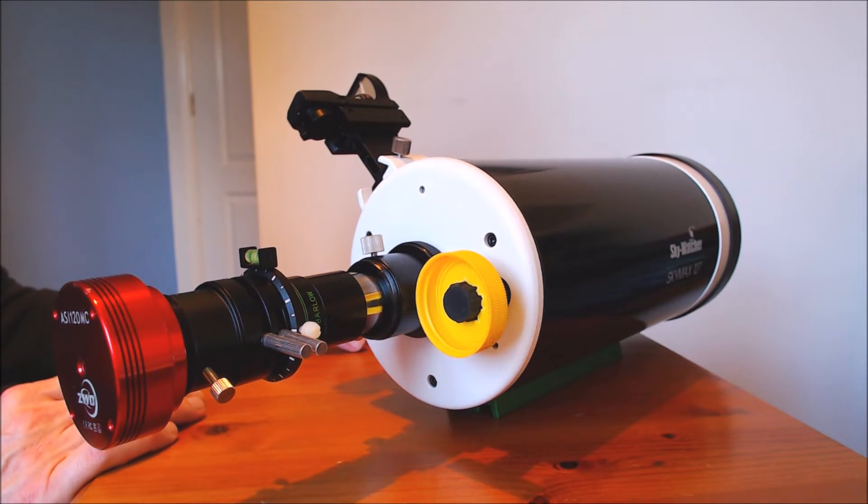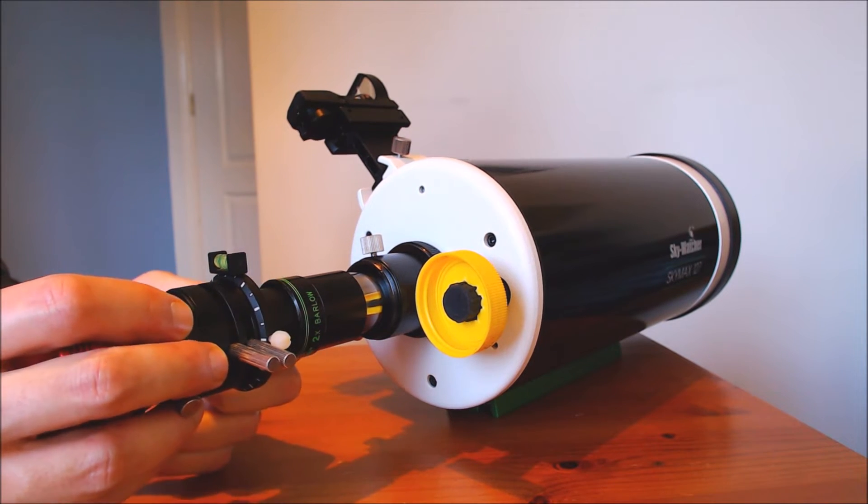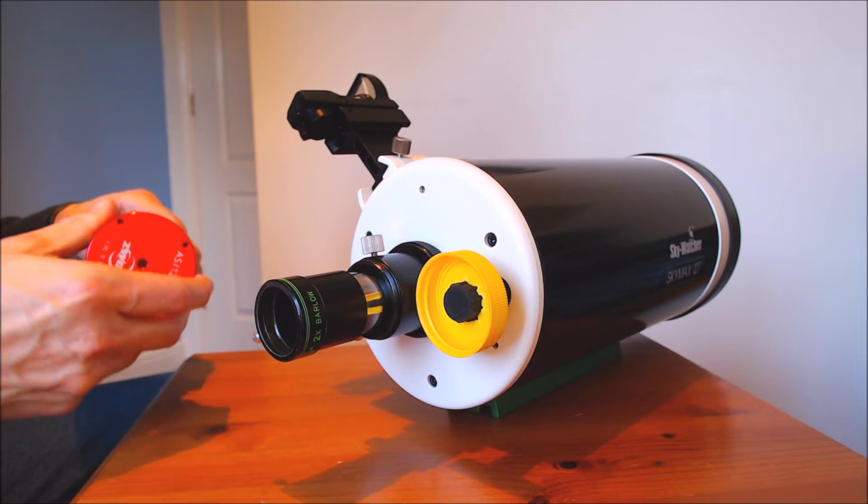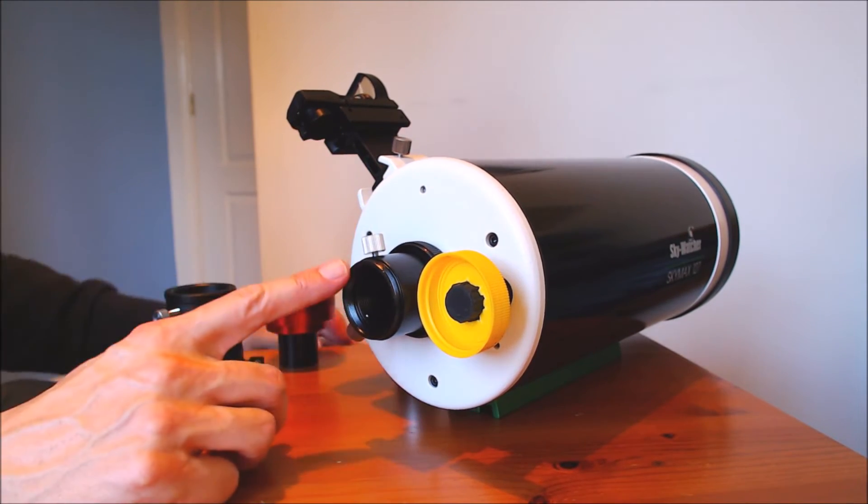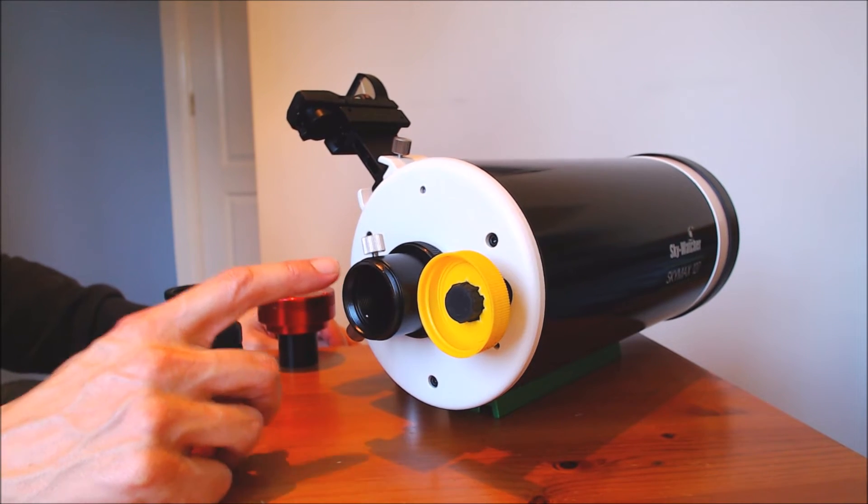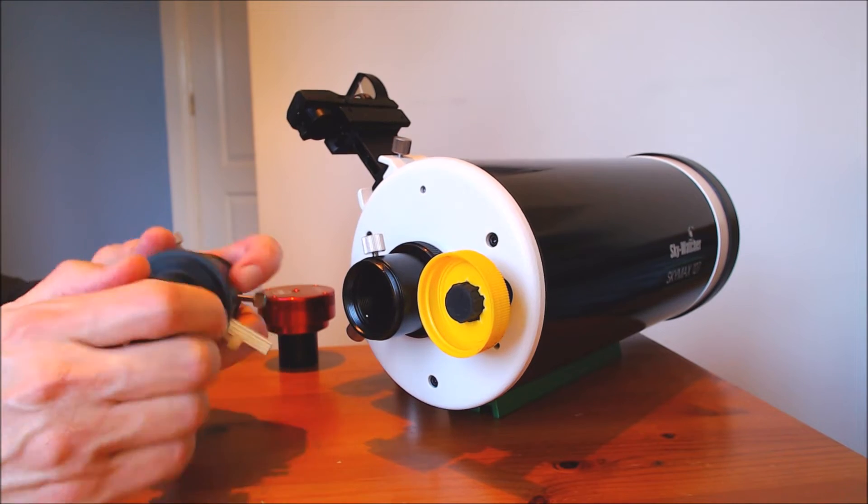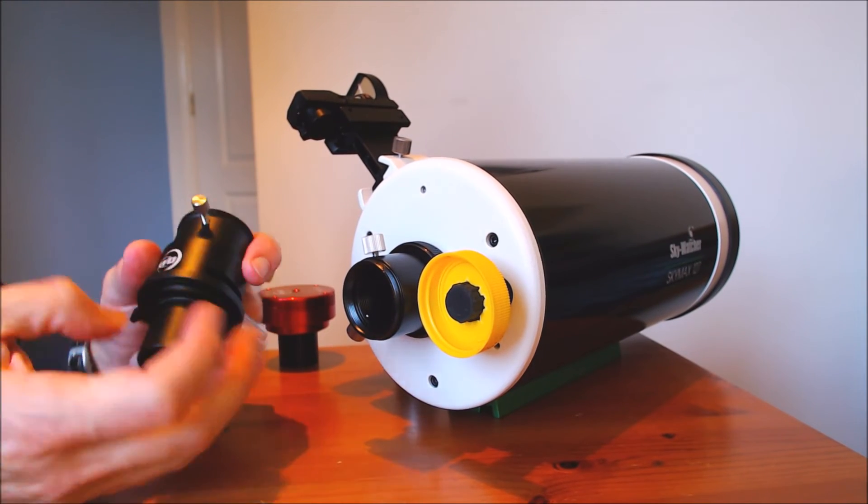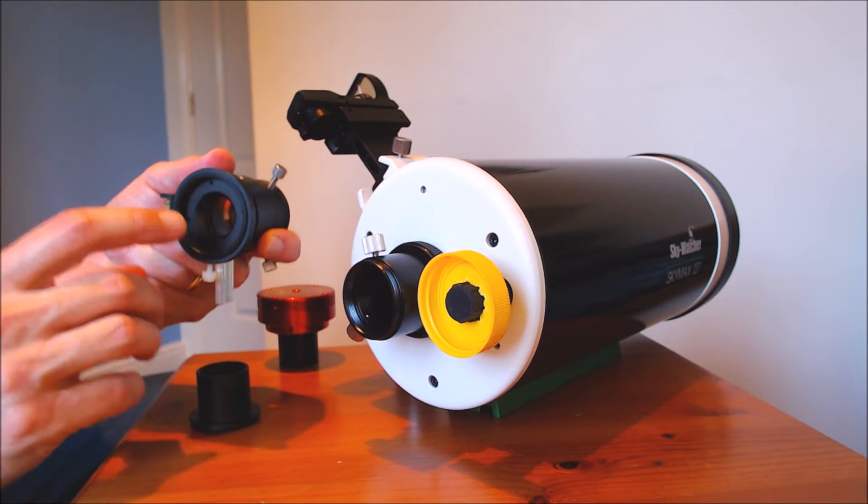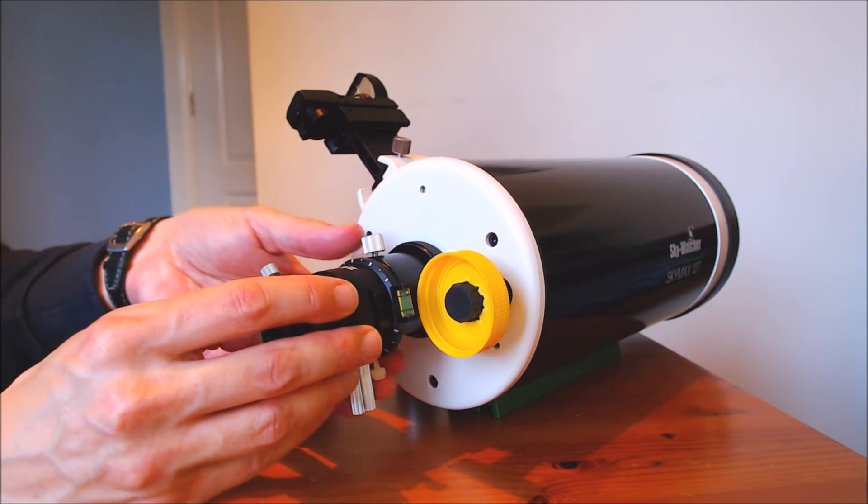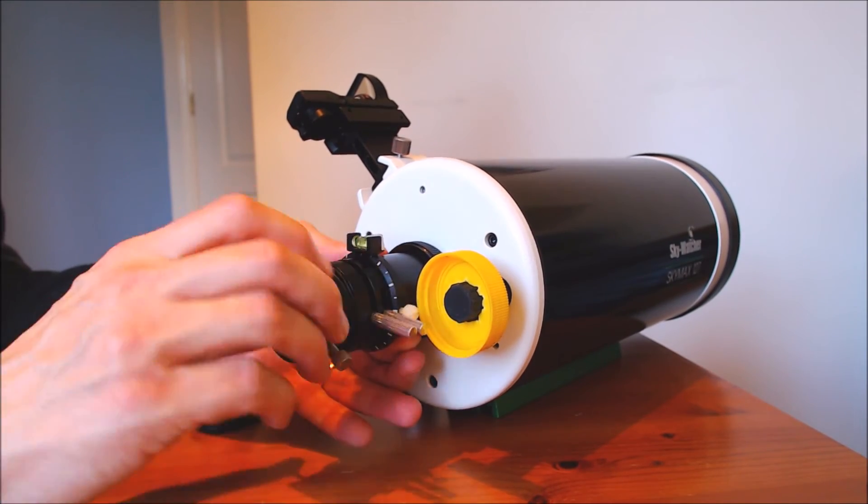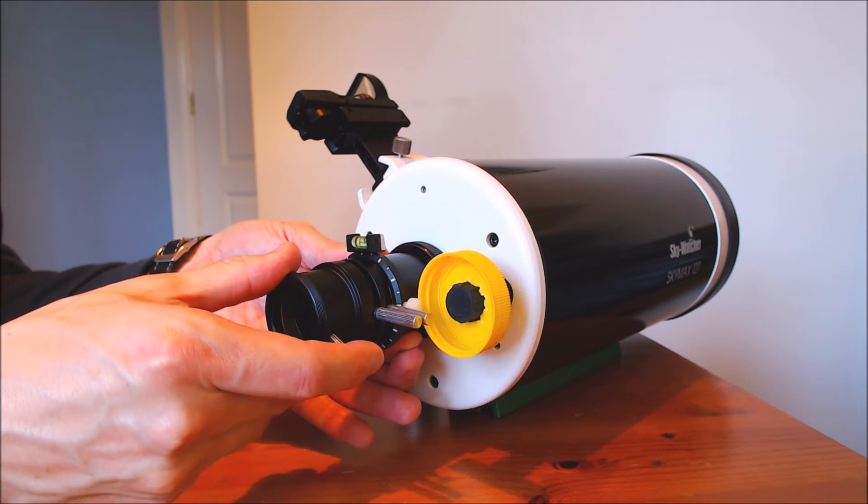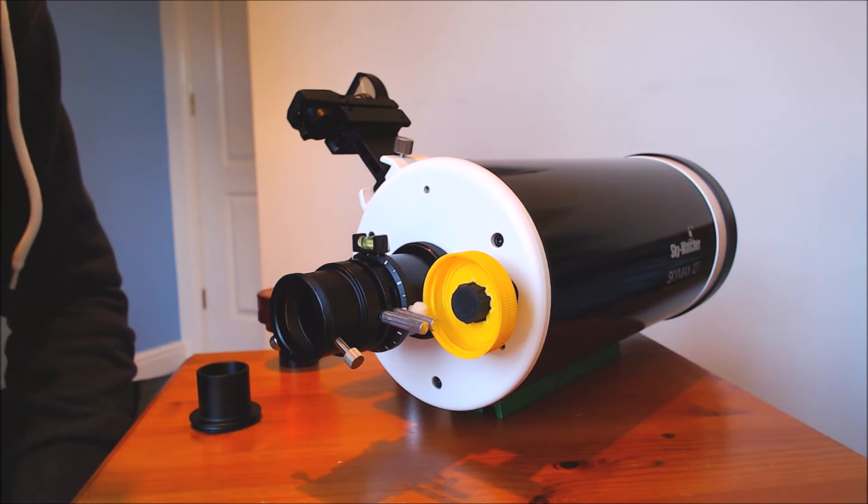The only other thing to note really is if you have a slightly different setup, if you don't need to use a Barlow and you have a case where your visual back has a T thread, then the ZWO body comes apart and you can reveal a thread which allows you to mate the ADC directly onto the back of the visual back. So that can give you quite a nice secure connection if you don't need to put anything between the visual back and the ADC.